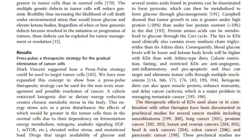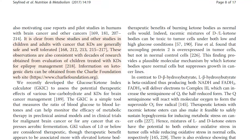The therapeutic effects of ketogenic diets used alone or in combination with other therapies have been documented in preclinical studies for several cancer models, including neuroblastoma, lung cancer, prostate cancer, breast and ovarian cancers, head and neck cancers, colon cancer and pancreatic cancer. It is clear from these studies and other studies in children and adults with cancer that ketogenic diets are generally safe and well tolerated. These observations are also consistent with decades of research from evaluation of children treated with ketogenic diets for epilepsy management. Information on ketogenic diets can be obtained from the Charlie Foundation website, www.charliefoundation.org.